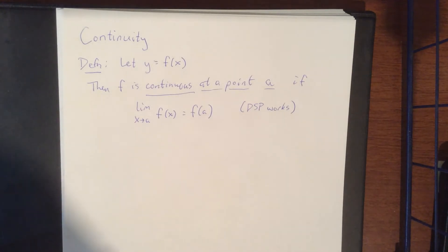So another way of saying this is that if the direct substitution property works then the function is continuous at a given point.